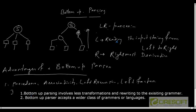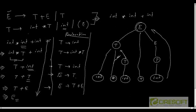In the last class we started our discussion on one technique of parsing called bottom-up parsing. The idea is that in this technique we create the parse tree in a bottom-up fashion — we create the leaf nodes first, then gradually create the intermediate nodes, and finally the root node which is the starting non-terminal.